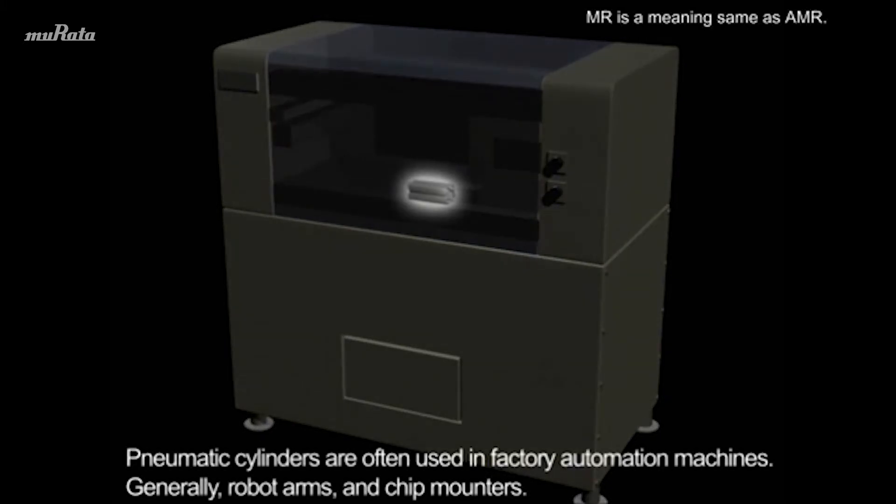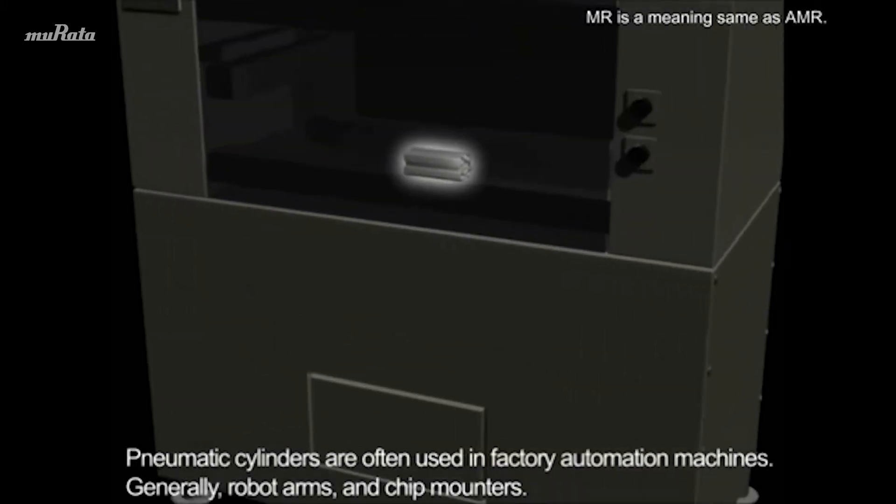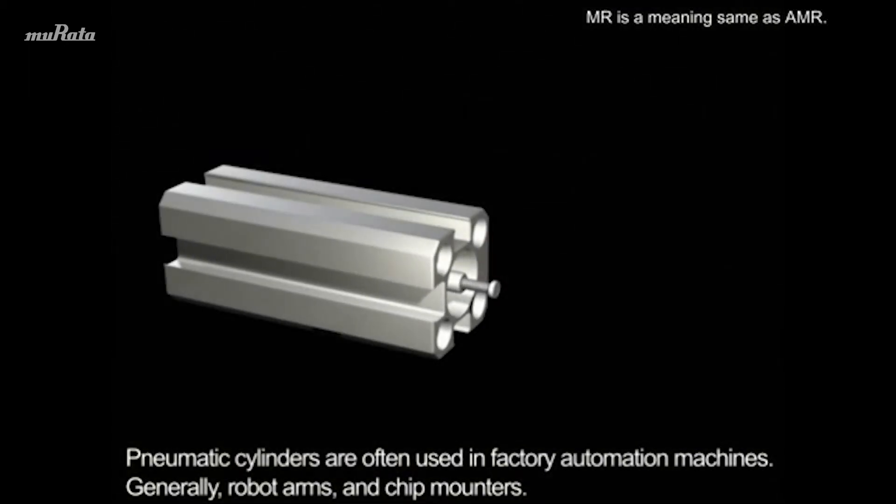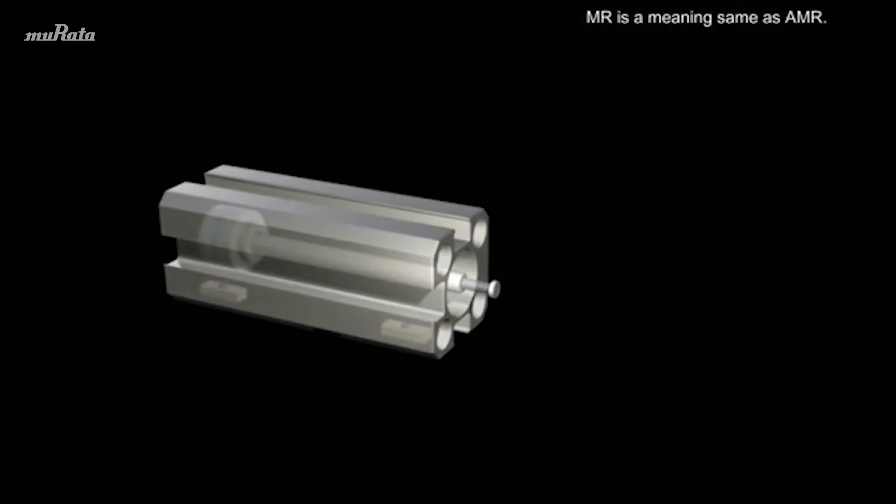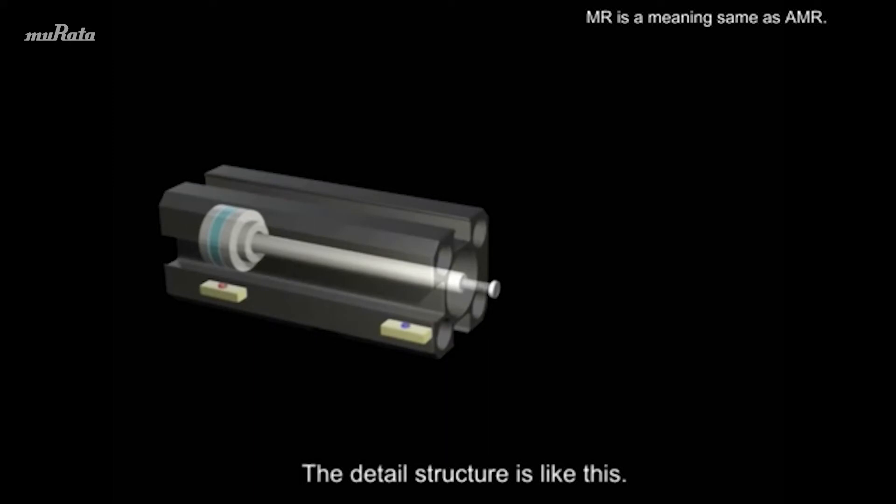Pneumatic cylinders are often used in factory automation machines, generally robot arms and chip mounters. The detail structure is like this.